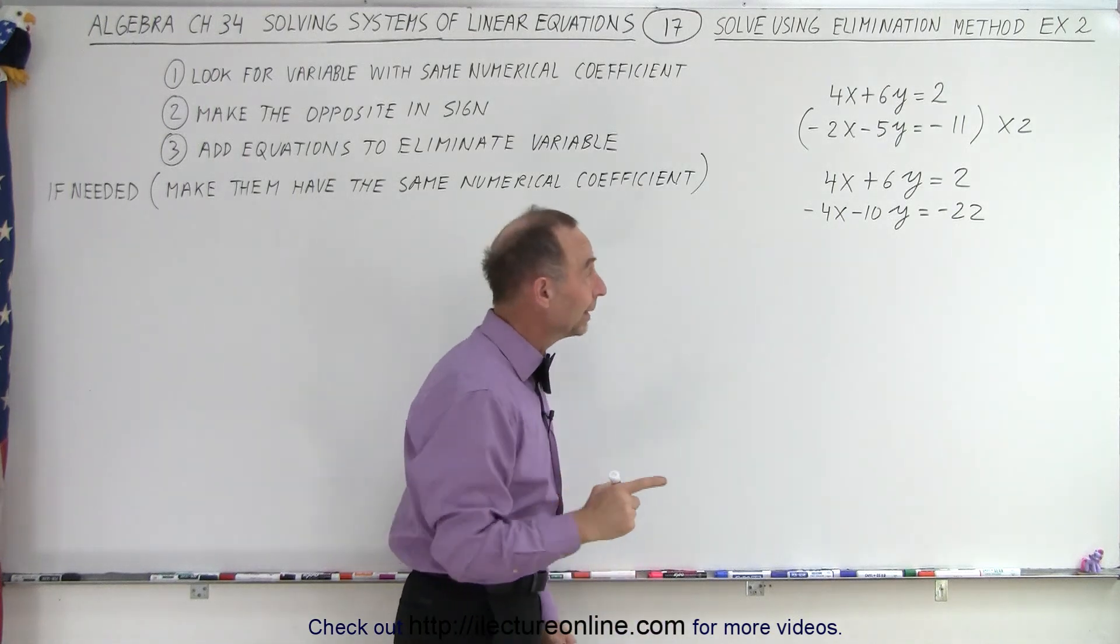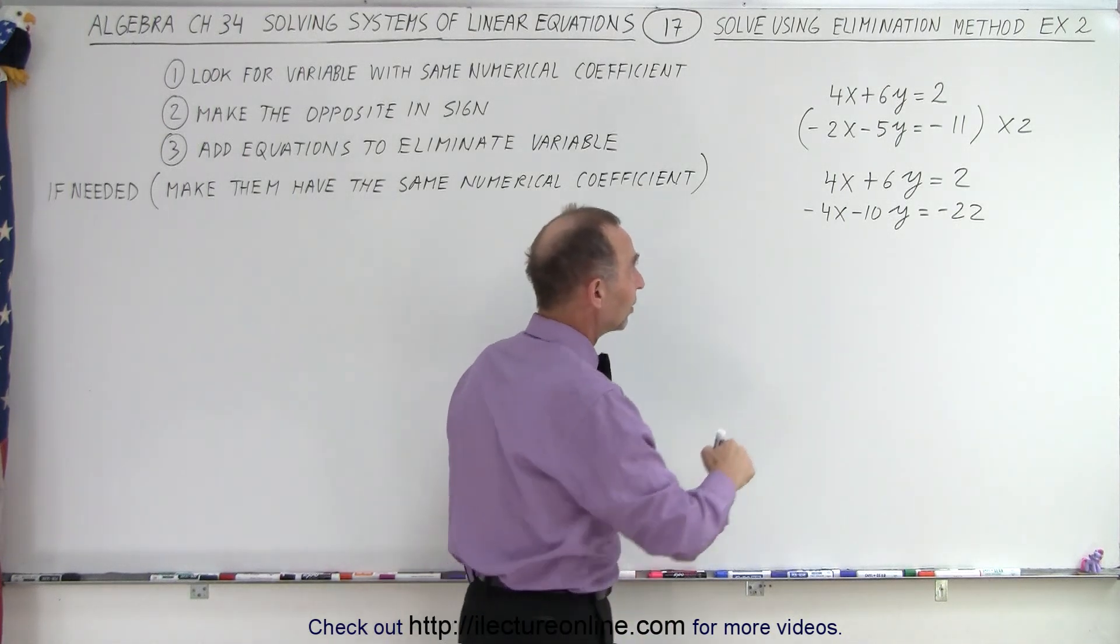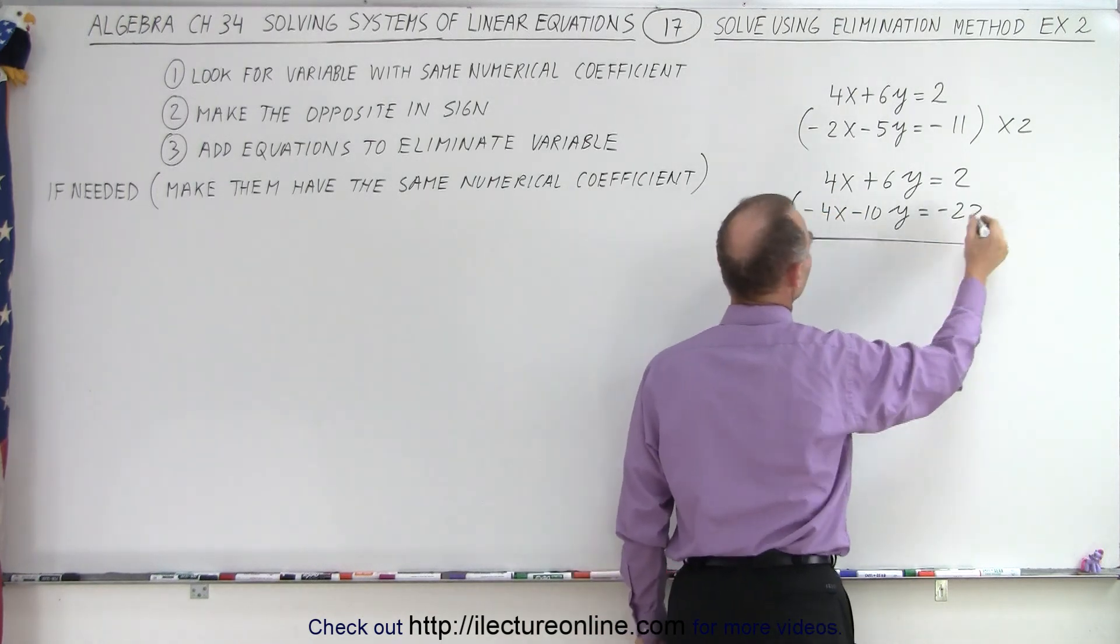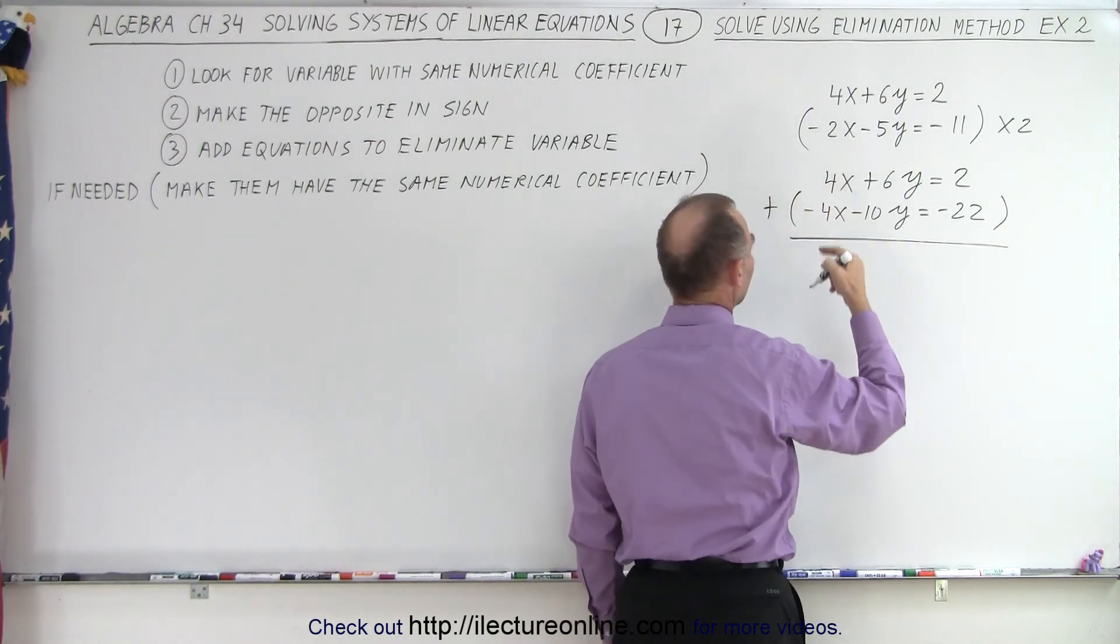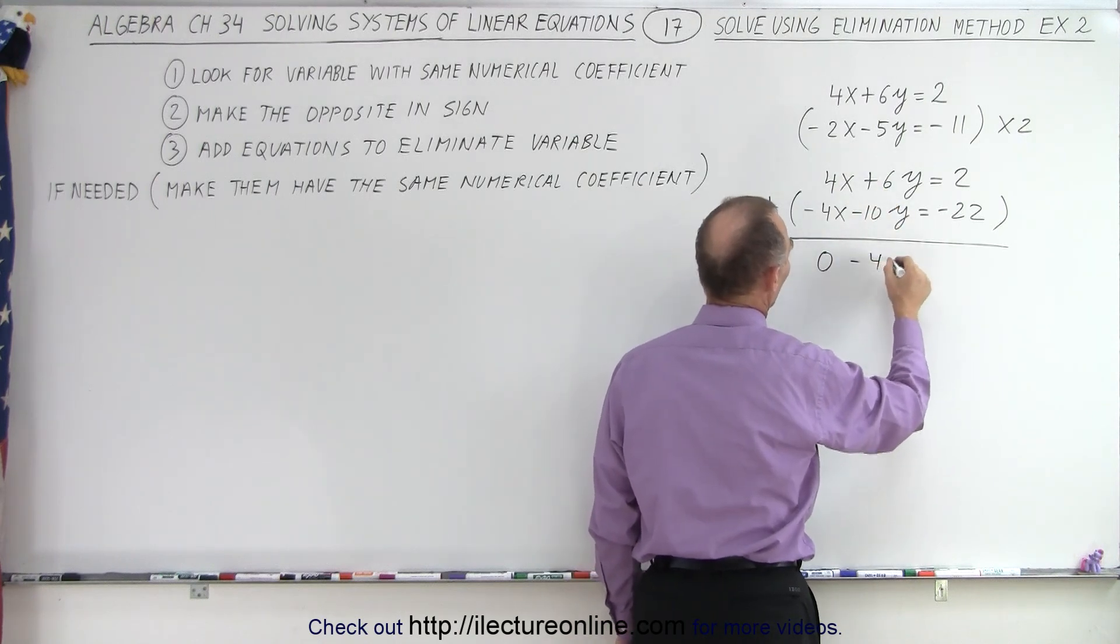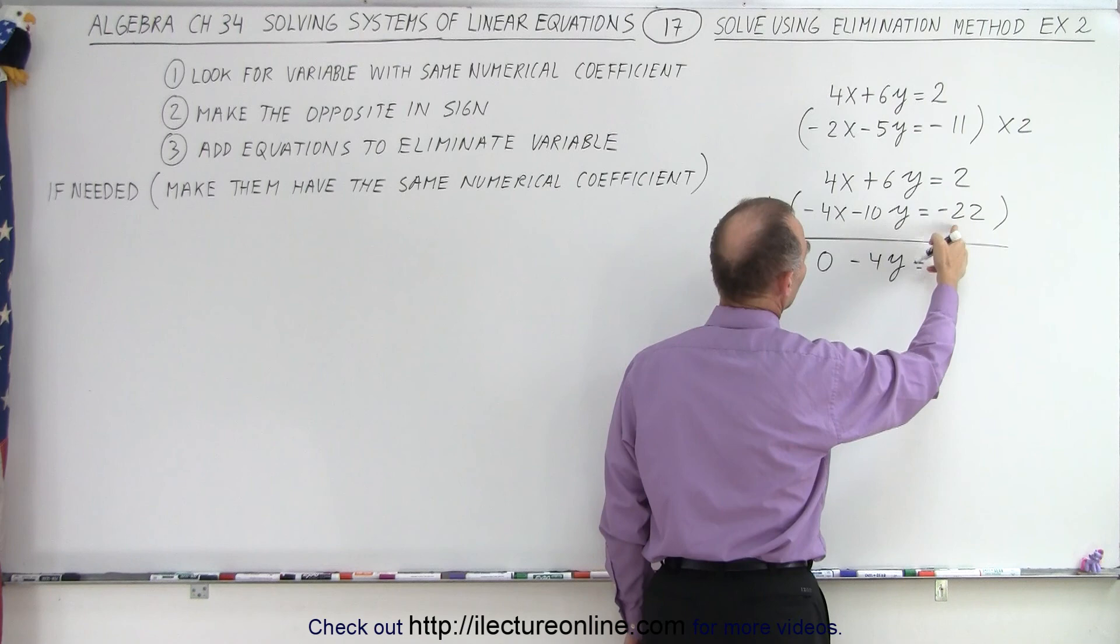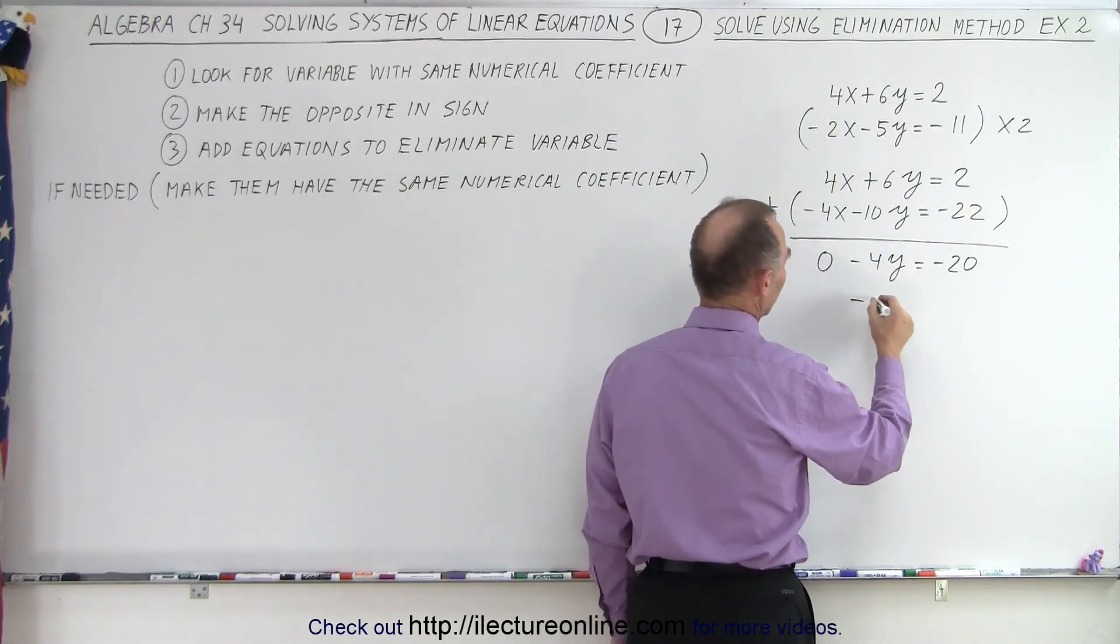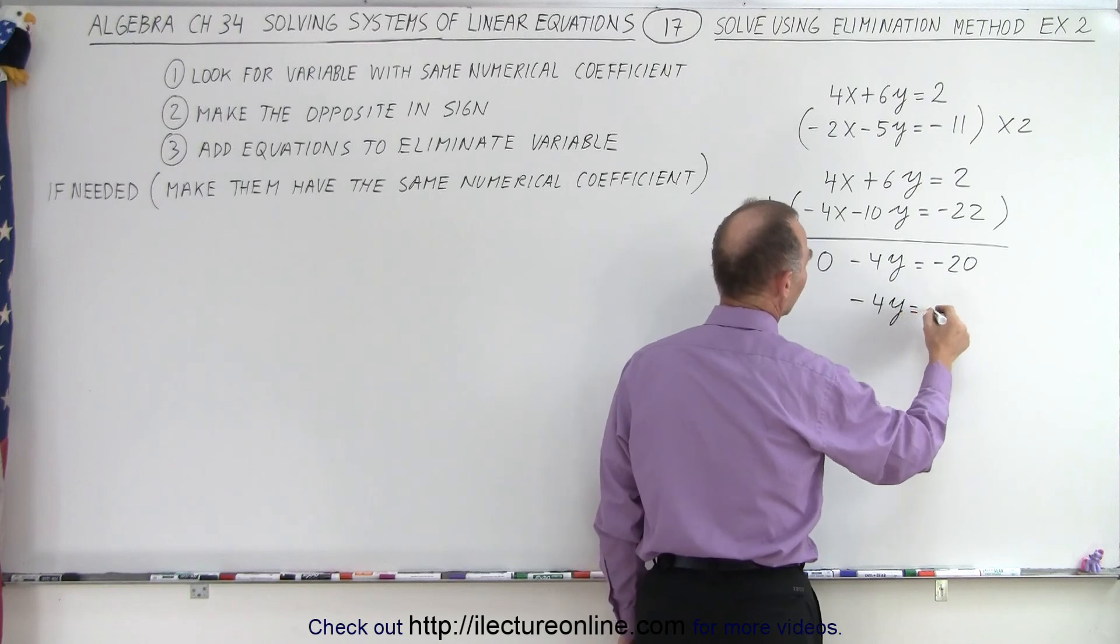Now I can go ahead and add those two equations together because that will eliminate the X's. So I'm going to add the two equations together. So 4X plus the negative 4X, that's 0. Plus 6 minus 10 is minus 4Y equals minus 22 plus 2, that's minus 20. And so I essentially end up with minus 4Y equals minus 20.